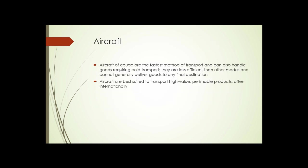Aircraft are the fastest method of transport and can handle goods requiring cold transport, but they're less efficient than other modes and can't deliver goods to any final location unless that destination happens to be an airport. So virtually everything delivered by airplane also needs to be trucked to its final location. Aircraft are best suited for high-value perishable products, often shipped internationally.